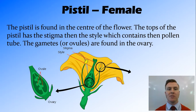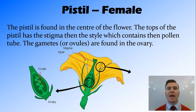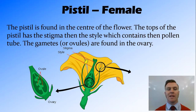On the pistil found in the centre, we have a few different parts too. At the top of the pistil is the stigma. Then we have a more stalky bit going down called the style, and there's a pollen tube within the style. Down at the bottom we have the ovary containing the ovules, or ovum, and they are the female gametes of the flower.